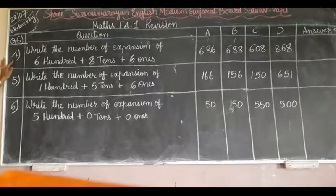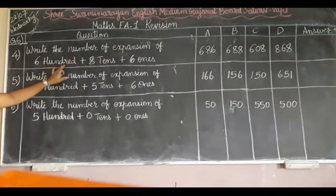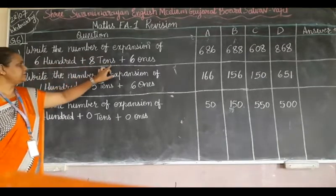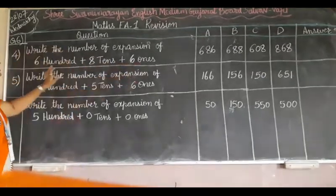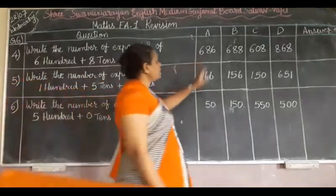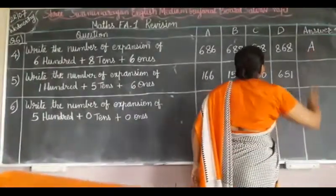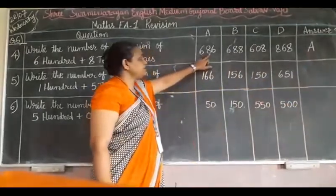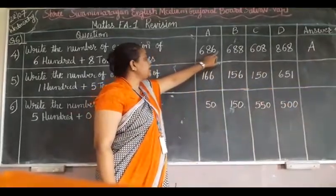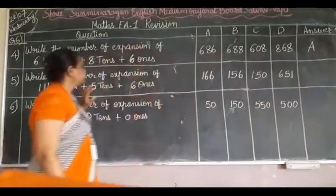Now fourth question: write the number expansion of 600, 8 tenths, and 6 ones. Which one is right? A option is the right option. 600, 8 tenths — 8 is in the tenths place and 6 is in the ones place.